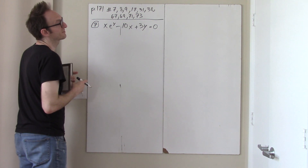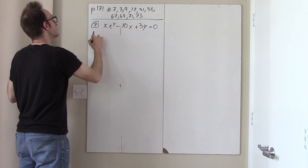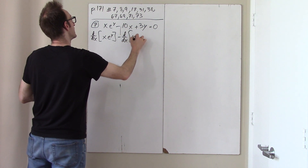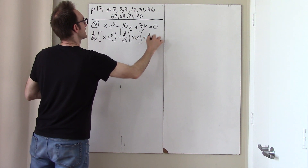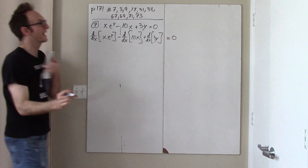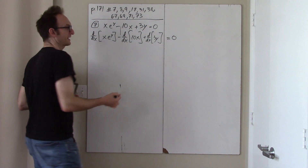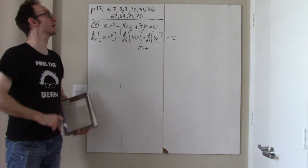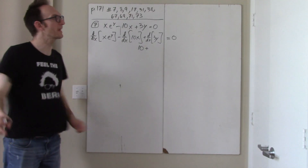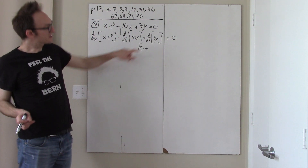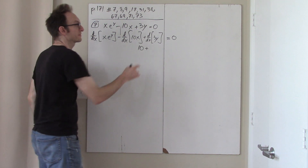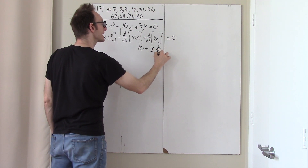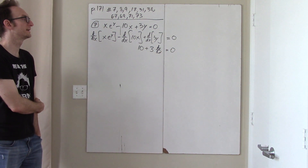We're going to take the derivative of the entire left-hand side and the derivative of the entire right-hand side. The derivative of the sum of a bunch of things is the sum of the derivatives. So I'm going to split this up into a bunch of little problems, plus the derivative with respect to x of 3y, and that equals zero. The easy ones first: the derivative of 10x is just 10. The derivative of 3y — note that I'm differentiating with respect to x — is 3 times dy/dx, the very thing I'm trying to find.